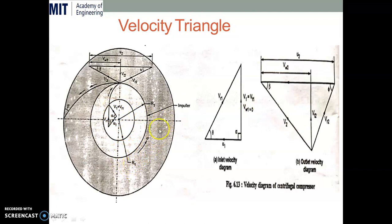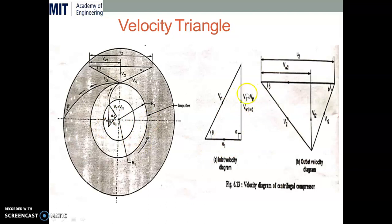The impeller is rotating in an anticlockwise direction with angular velocity omega. At inlet, after V1, we get U1, which is the tangential velocity. V1 is the resultant of relative velocity and U1. So we have to complete this triangle: U1 is on the left-hand side and V1 is the resultant. V1 equals Vr1 plus U1 as per the vector law. The resultant and components meet at a single point — U1 and Vr1 are in the anticlockwise direction, meeting at that point to complete the inlet velocity triangle.